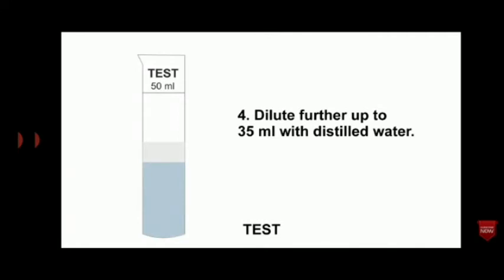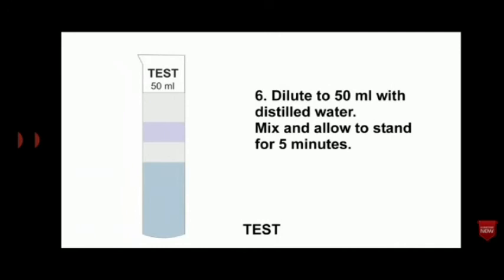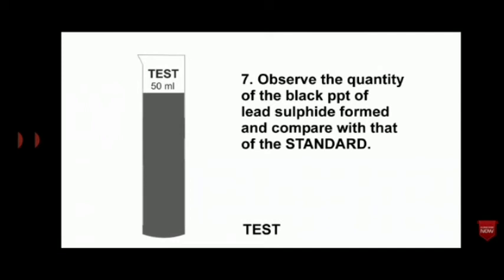Dilute further up to 35 ml with distilled water. Add 10 ml of freshly prepared hydrogen sulfide solution. Dilute to 50 ml with distilled water, mix, and allow to stand for 5 minutes. Observe the quantity of the black precipitate of lead sulfide formed and compare with that of the standard.